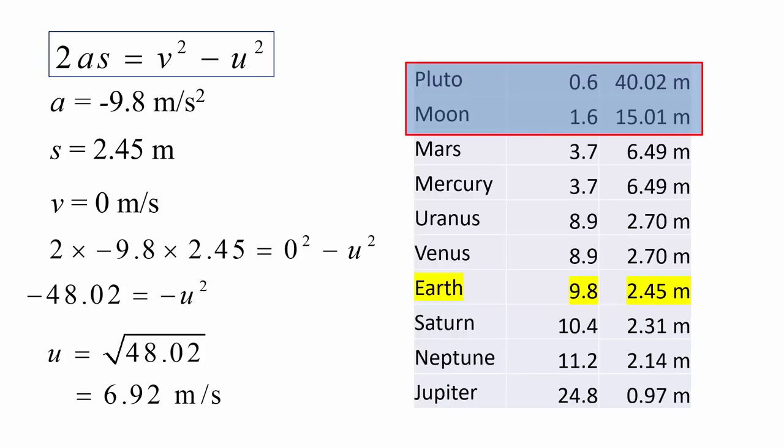Earth, of course, has a gravitational acceleration of 9.8. And the maximum height, we said, was 2.45 meters. Let's look at the top of that scale. We have Pluto and the Moon. And it turns out that the maximum height on Pluto is about 40 meters. That's incredible, isn't it? And on the Moon, about 15 meters.